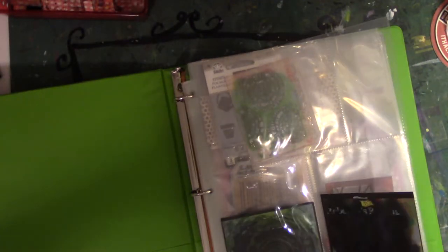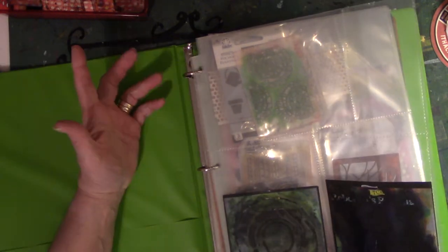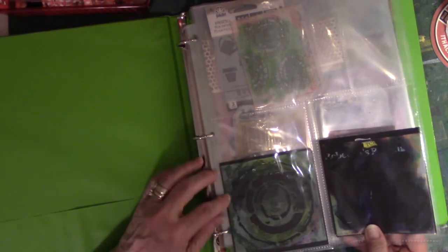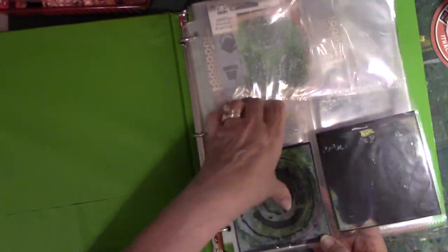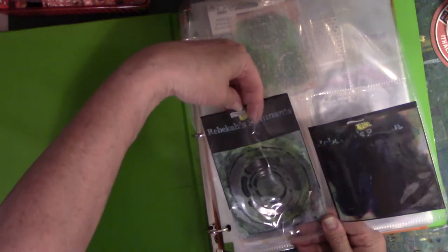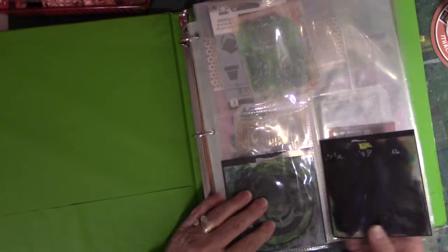All right, so this is how I store the little ones. I got this at Tuesday Morning, the four by six pockets for photos. I pick them up and then the little tiny ones, I think these are four by fours or four by threes.